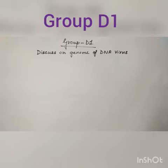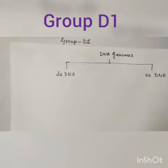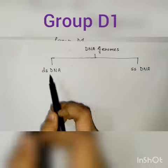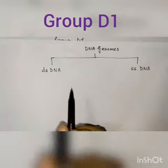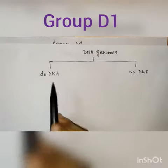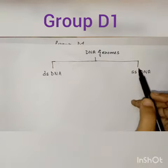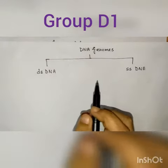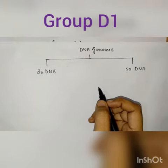A virus has either a DNA or an RNA genome, where the DNA genome is called a DNA virus. DNA genomes have two parts: DS DNA and SS DNA. DS DNA is double-stranded DNA and SS DNA is single-stranded DNA. Our DNA virus has DNA as its genetic material.